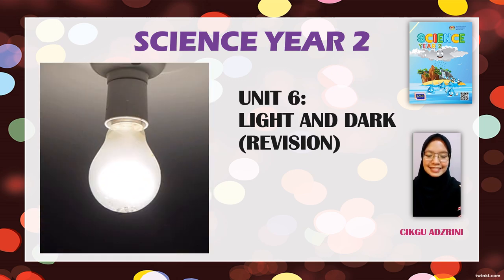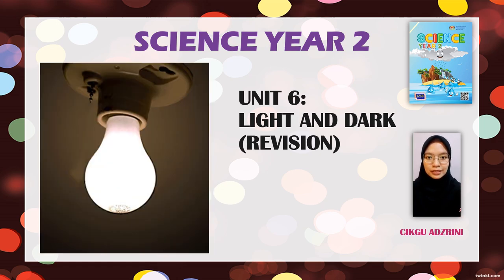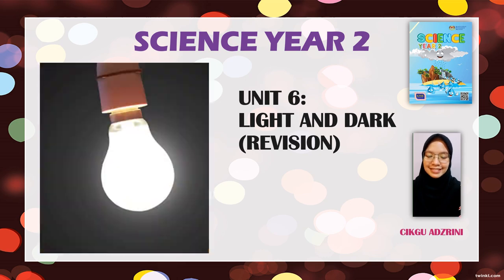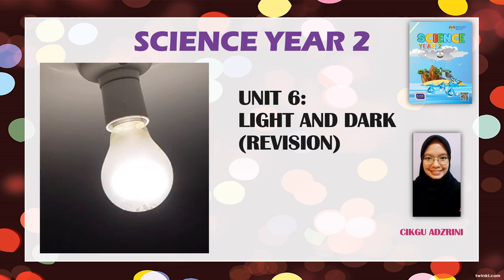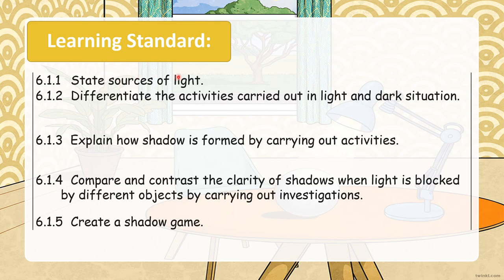We already completed all the subtopics in Unit 6, so today we are going to go through once again and revise what you have learned before. This is the learning standard that you're supposed to master in this topic: K6.1.1 — state sources of light, differentiate activities carried out in light and dark situations, explain how shadow is formed by carrying out activities, compare and contrast the clarity of shadows when light is blocked by different objects, and create a shadow game.